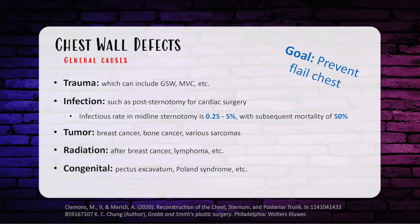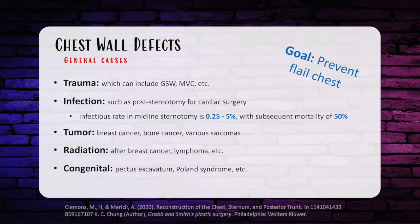Breaking those down: trauma can include gunshot wounds and motor vehicle crashes. Infections such as post-sternotomy for cardiac surgery — the infection rate in midline sternotomy is about 0.25 to 5% with a subsequent mortality of 50%. Tumors can include breast cancer, bone cancer, and various sarcomas. Radiation is another category, seen after breast cancer, lymphoma, and so forth. The last category is congenital, which includes pectus excavatum and Poland syndrome.